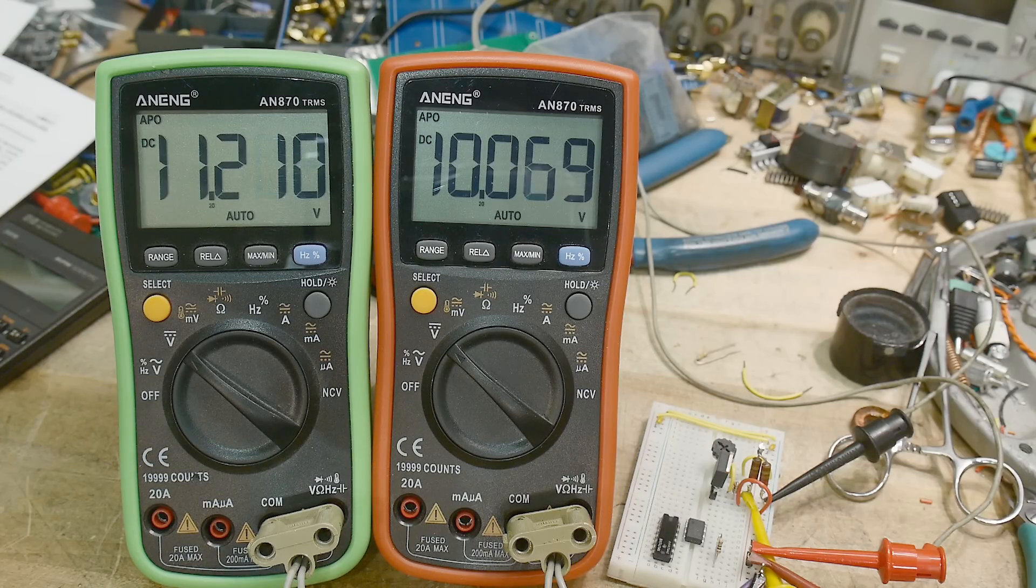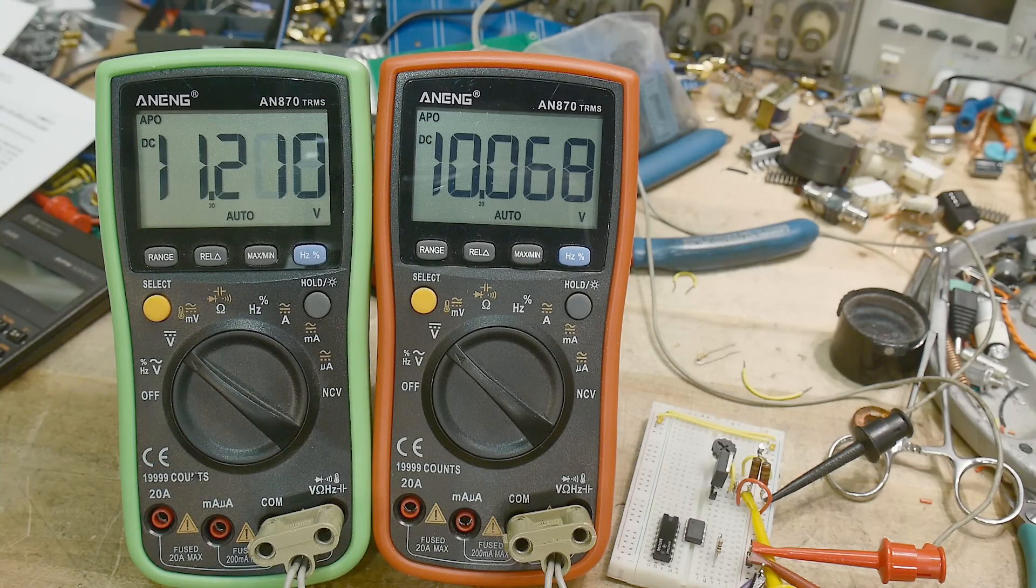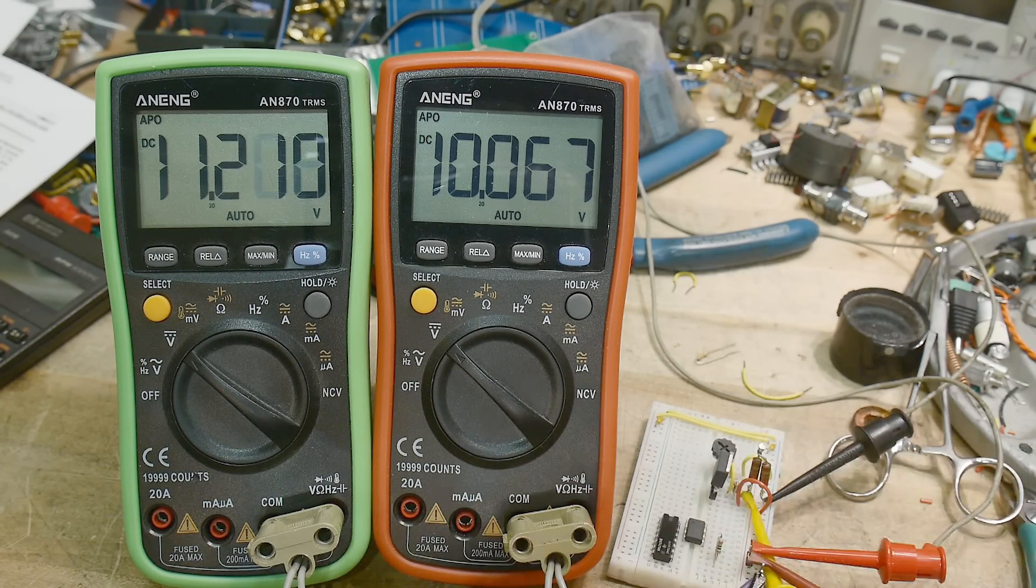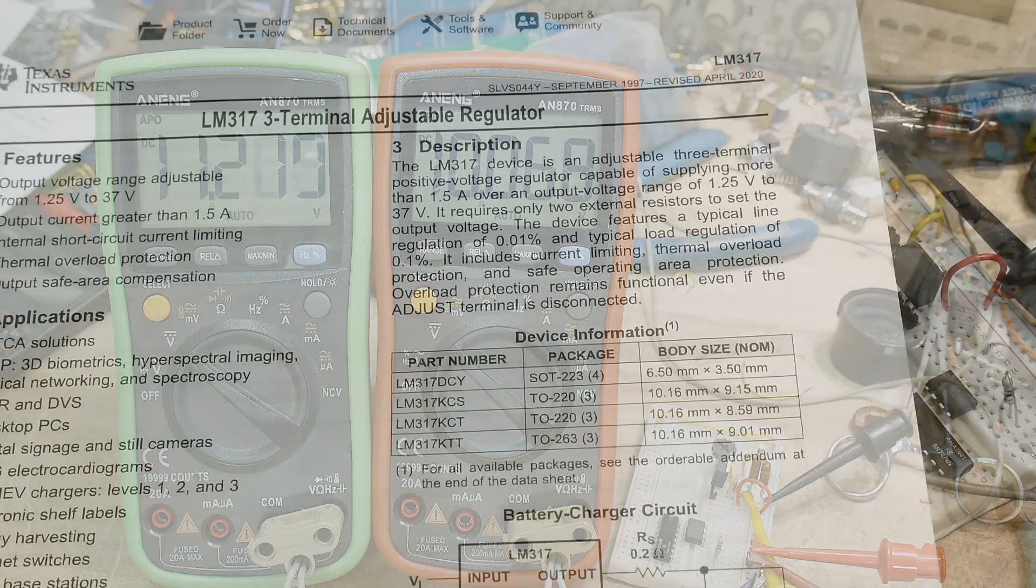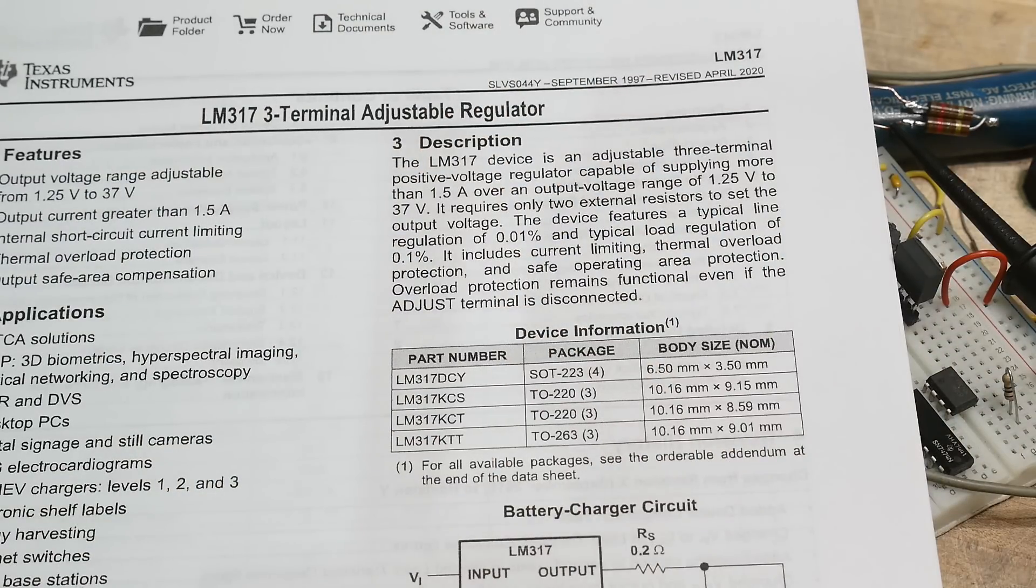So the low dropout regulator is about half a volt, half a volt better in this particular case. And like I said, this is probably an easy case. But we can see that the low dropout is doing its job. That's the video on what it means to be low dropout.